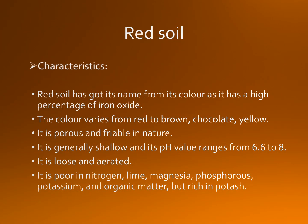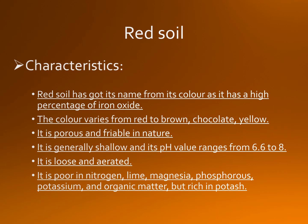Red soil has got its name from its color as it has a high percentage of iron oxide. The color varies from red to brown, chocolate, and yellow. It is porous and friable in nature. It is generally shallow and its pH value ranges from 6.6 to 8. It is loose and aerated. It is poor in nitrogen, lime, magnesia, phosphorous, potassium, and organic matter, but rich in potash.